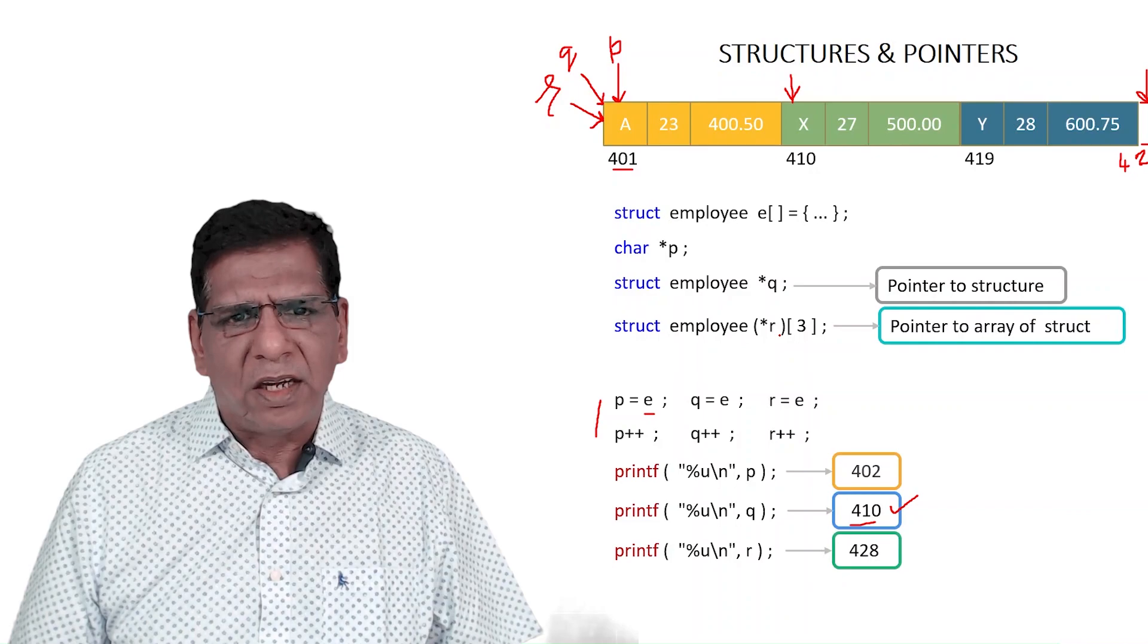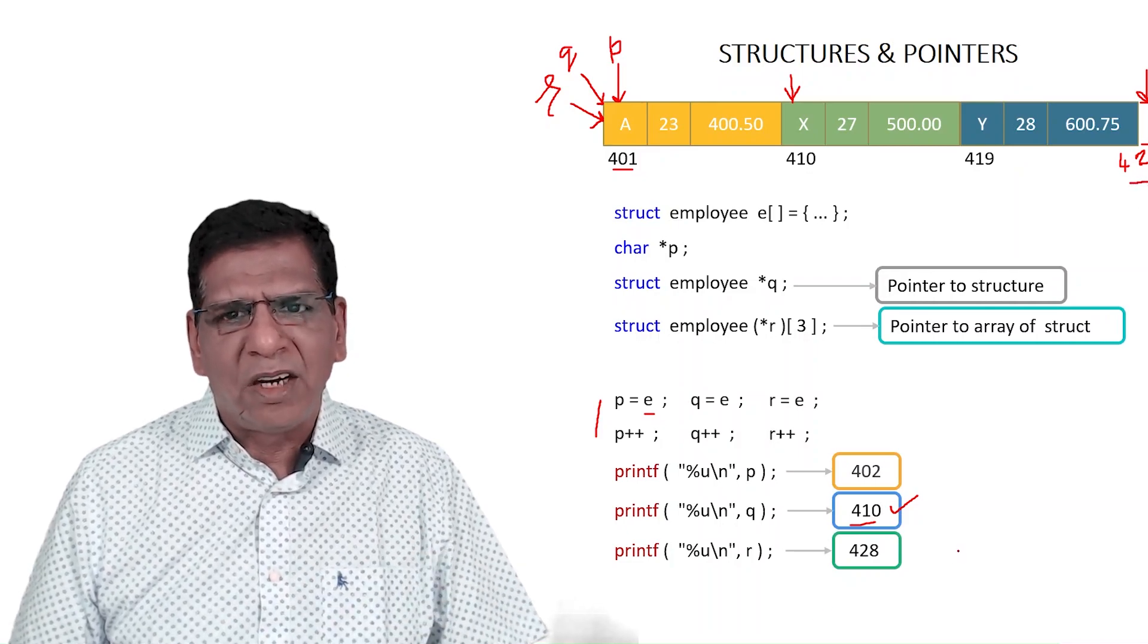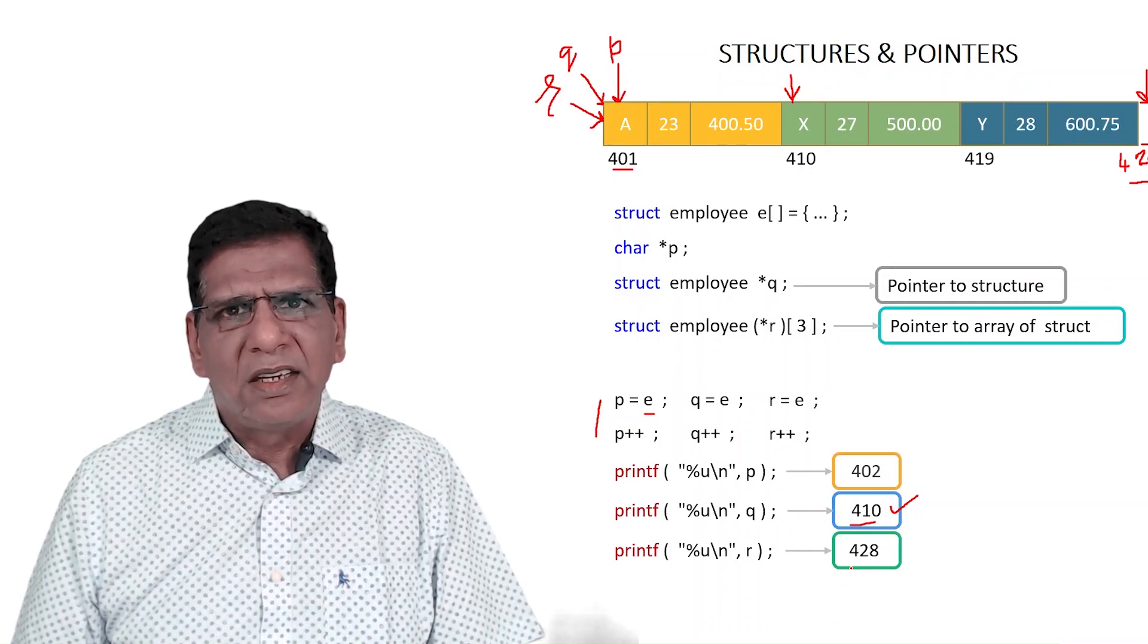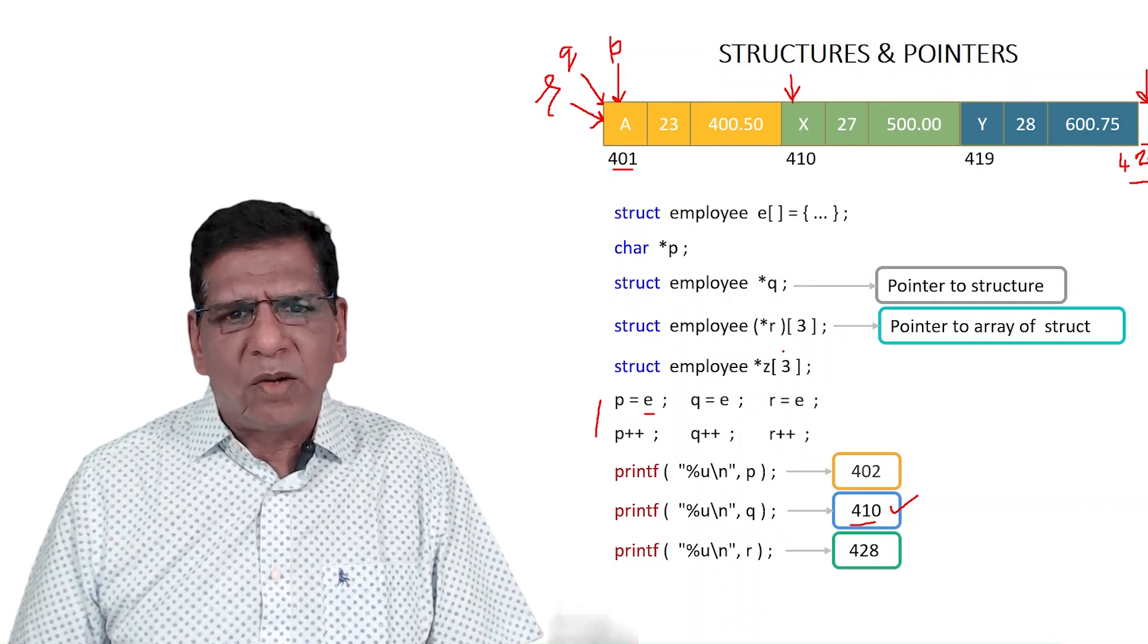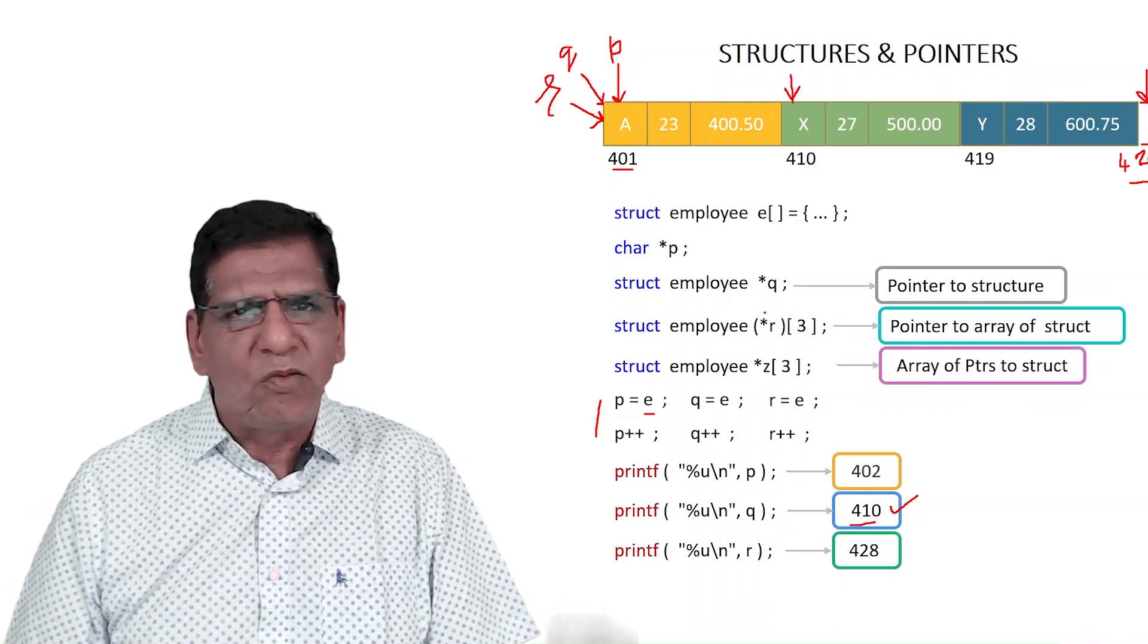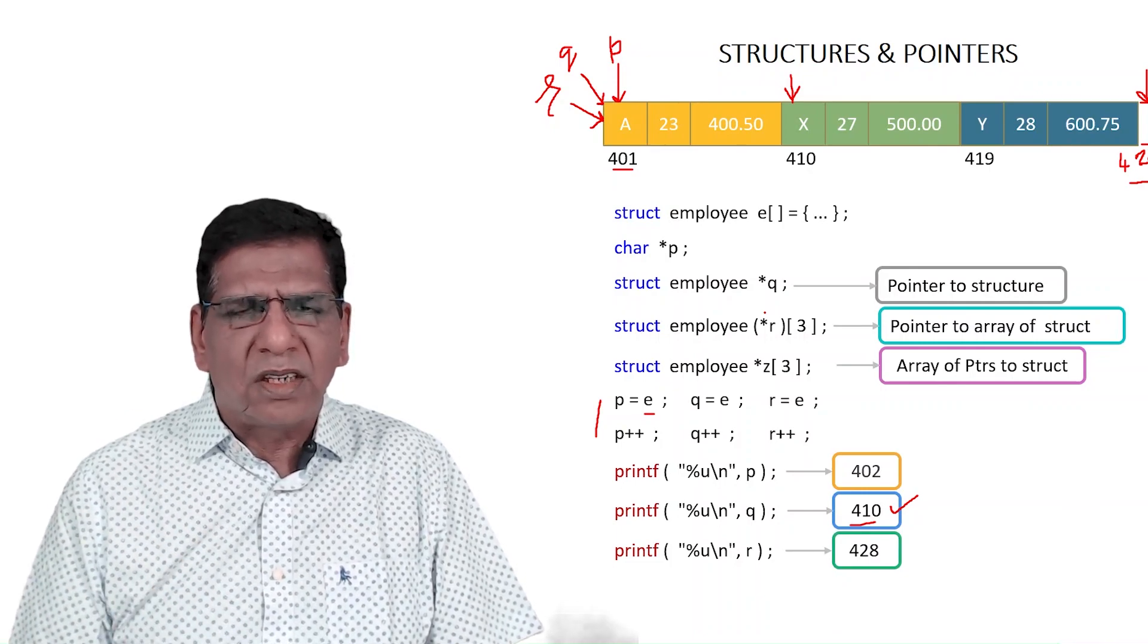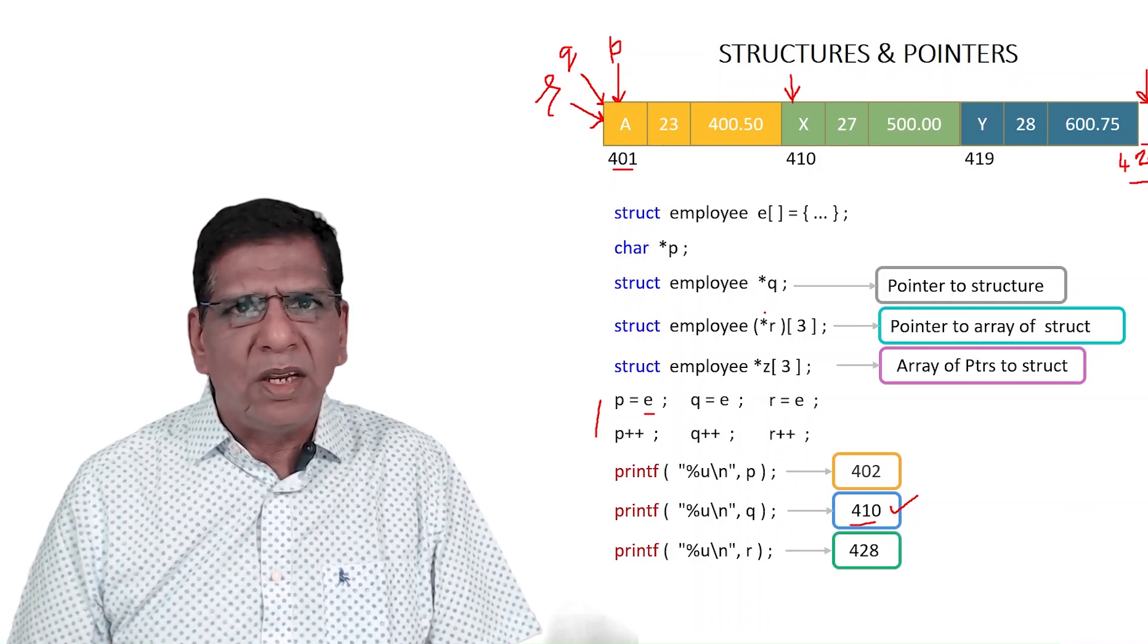If I do not use parentheses the way I have done here, then Z becomes an array of pointers to structures, which is fundamentally different than pointer to array of structures. The differences are: if I do Z equal to E and then try Z++, that would be wrong. Why would Z equal to E be wrong? Because Z is an array now, and array name equal to something is always wrong, no matter what is the type. Array name equal to something would never fly. This is wrong. Again to reiterate, P is a char pointer, Q is a pointer to a structure, R is pointer to an array of three struct employees, and Z is an array of three struct employee elements.